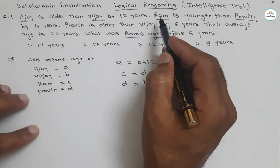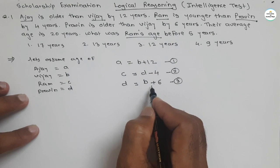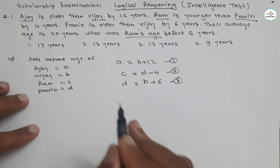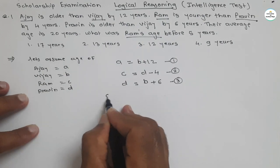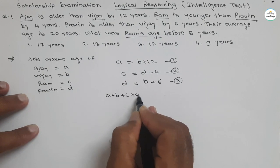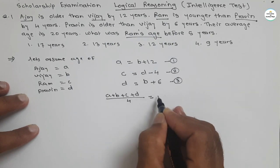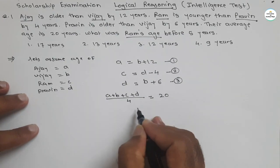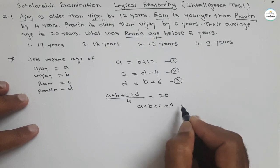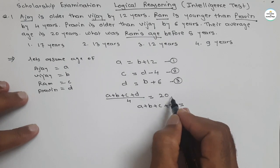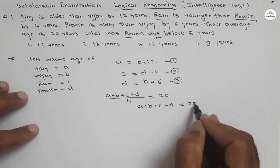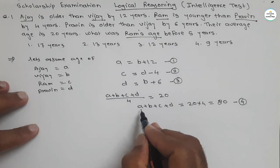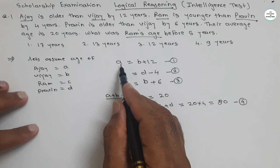Now use these equations and one more condition is given: their average age is 20 years. Average means if we add all ages: a + b + c + d divided by 4 equals 20. Transferring the 4, we get a + b + c + d = 20 × 4 = 80. This is our fourth equation.